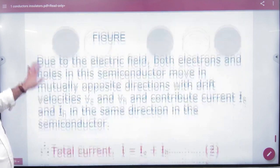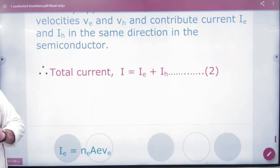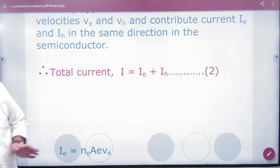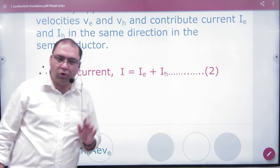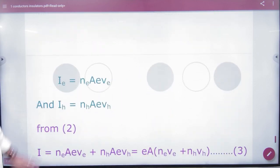After that, the total current is any semiconductor. The sum of electronic current and hole current. So, I have added it.